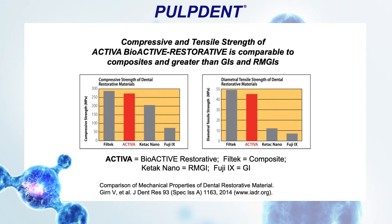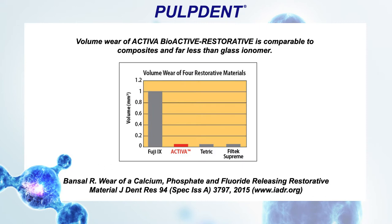When looking at wear rates, glass ionomers wear tremendously because they're not designed to take forces of occlusion or occlusal wear. Activa wears more like traditional composite. So you have nutritive ions — calcium, phosphate, and fluoride — with ion release and recharge, yet a material with wear rates, compressive strength, and diametral tensile strength similar to a composite.